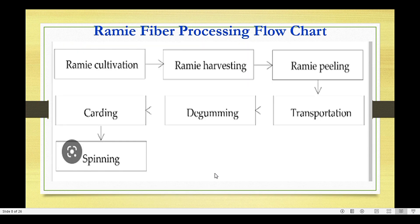The Ramie fiber processing flow chart includes the following stages: cultivation, harvesting, transportation, degumming, carding, and spinning. This is the complete flowchart of Ramie fiber processing.